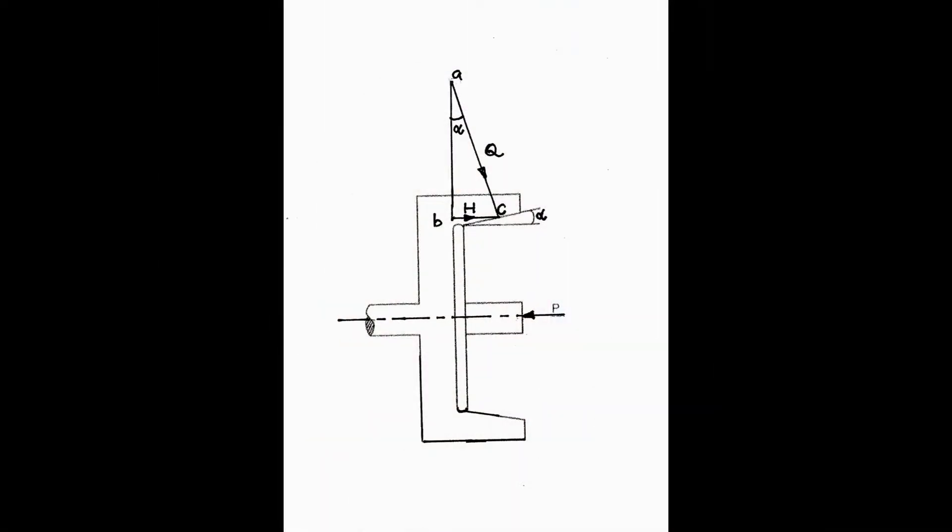Before we move on to the details of this diagram, let us try to understand how the force acts on this frictional surface. We refer to this diagram which shows the conical surfaces and the force acting on it. The force acts along the axis of the shaft, shown here as P, and the half cone angle is shown as alpha.